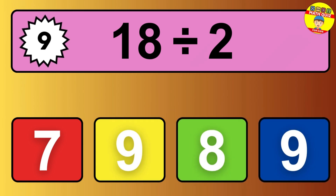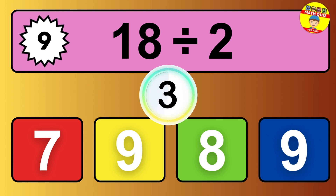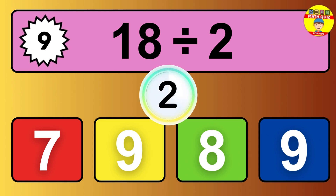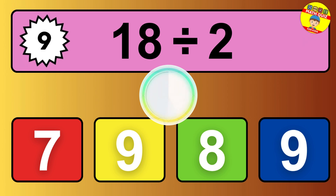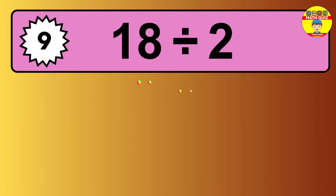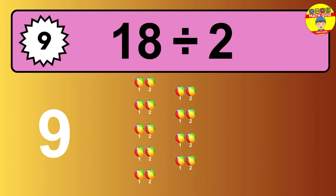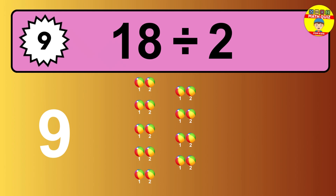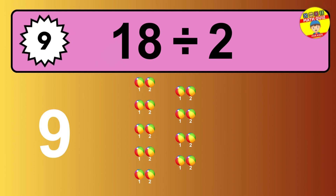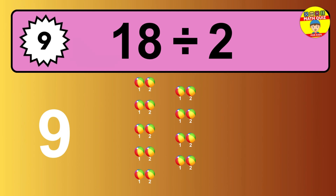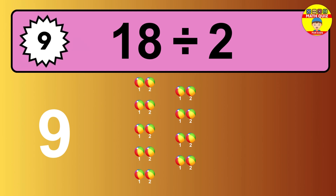18 divided by 2 — time to think. Let's go to the solution. Divide the number 18 by 2. Each group contains 2 units, so dividing 18 by 2 results in 9 equal groups. Thus, the result is 18 divided by 2 equals 9.